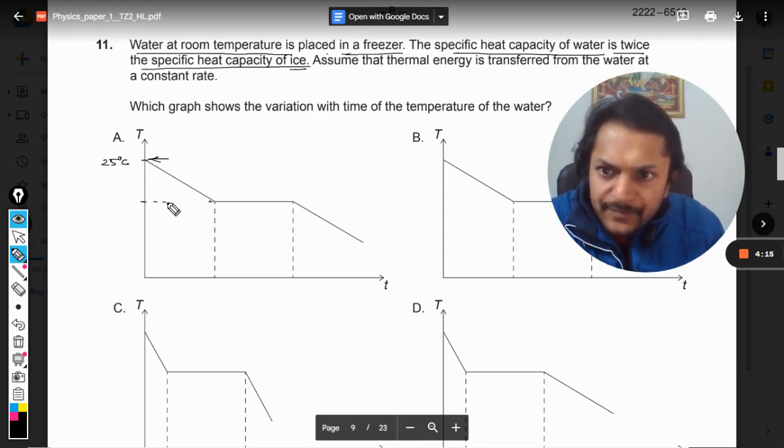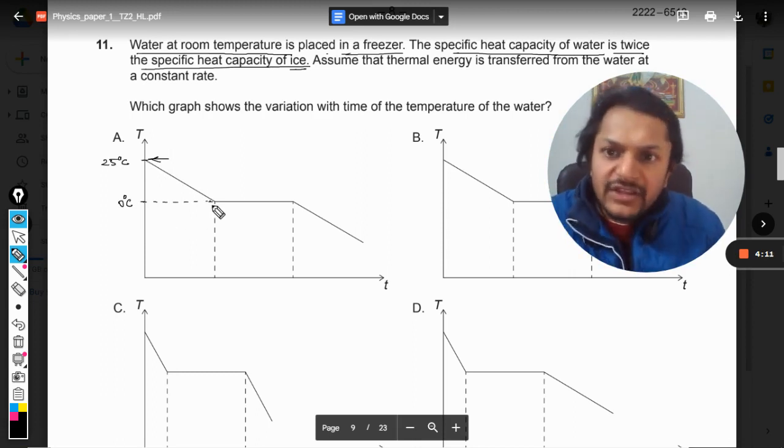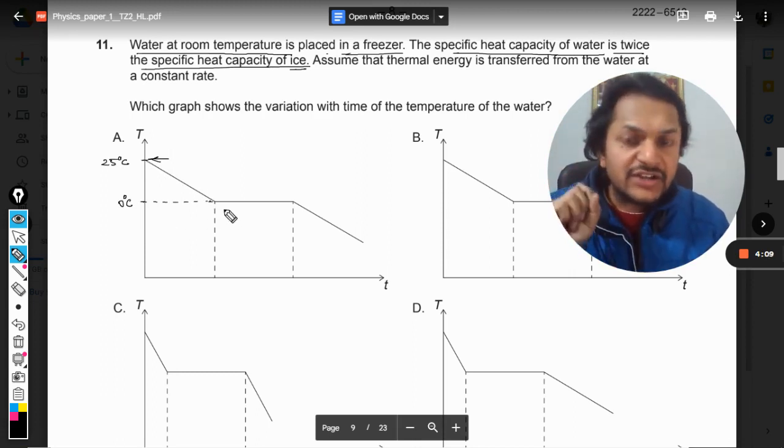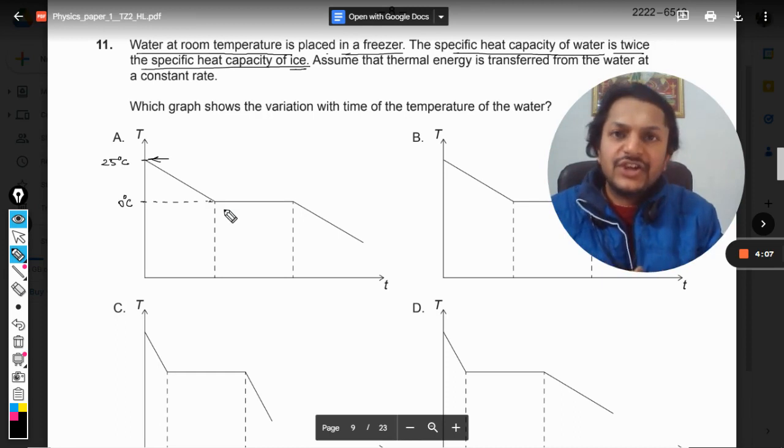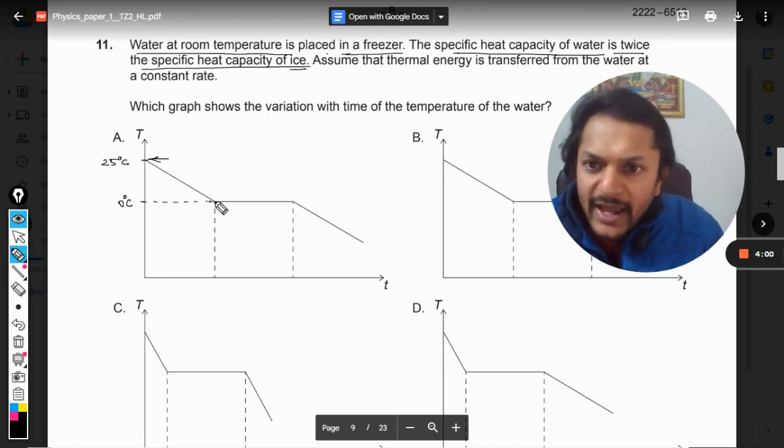Up to this point, the temperature becomes zero degrees centigrade, and after that the phase change starts. So in the process of a phase change, we know that the energy is lost but the temperature is kept constant.